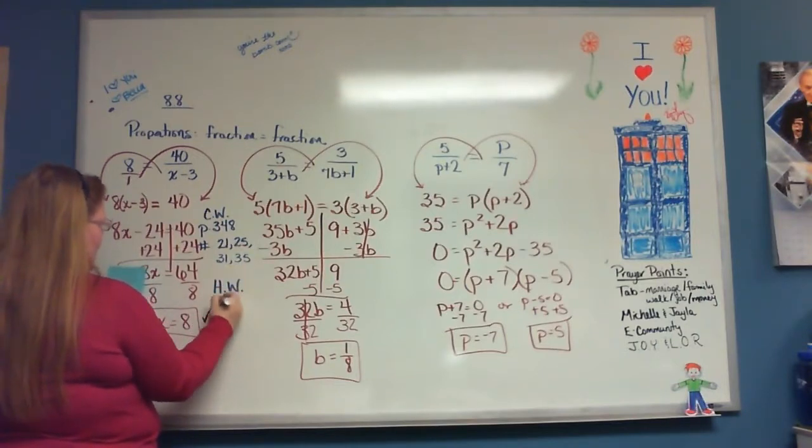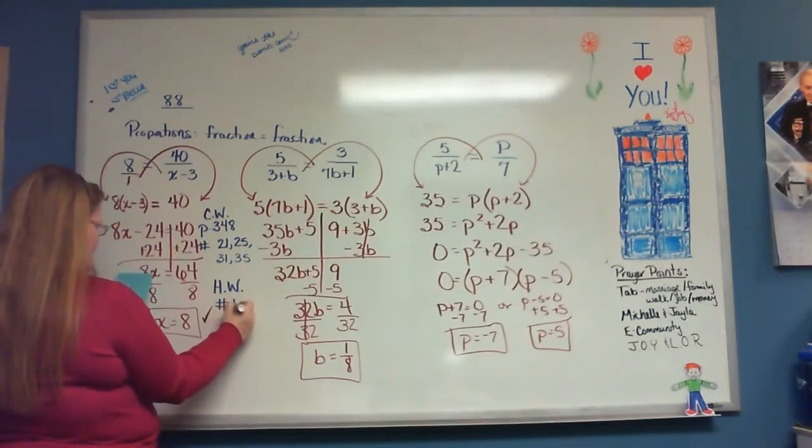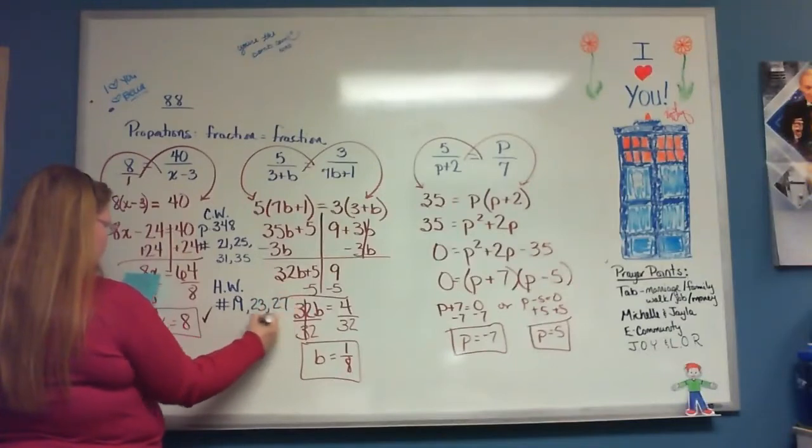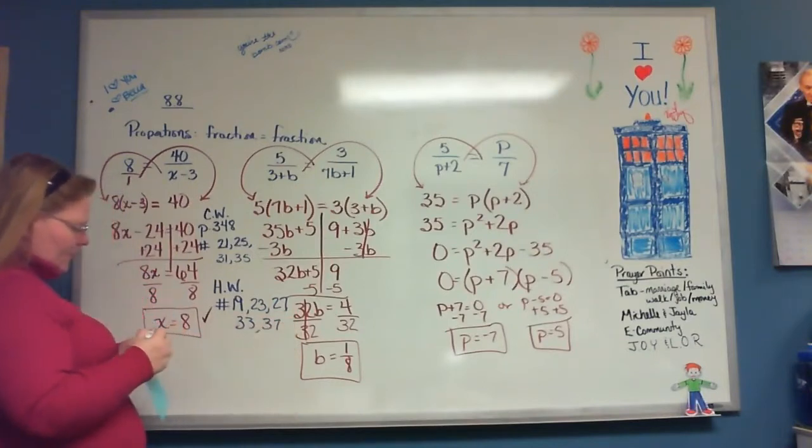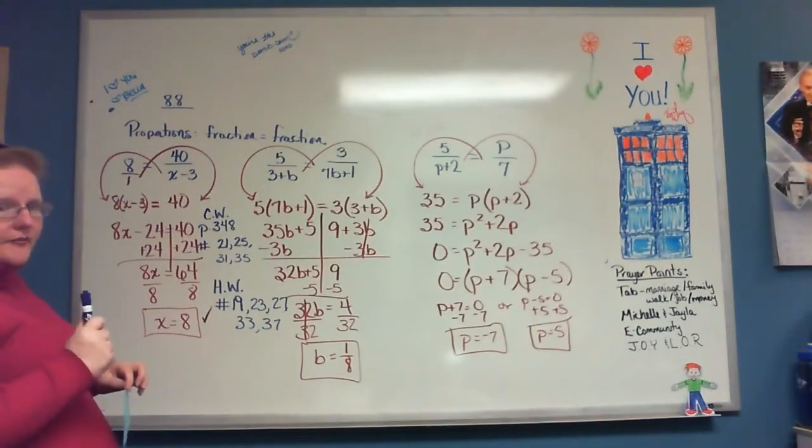Homework. Same page. Numbers 19, 23, 27, 33, and 37. There you go. Piece of cake. You will see me tomorrow. Go ahead. We appreciate you so much.